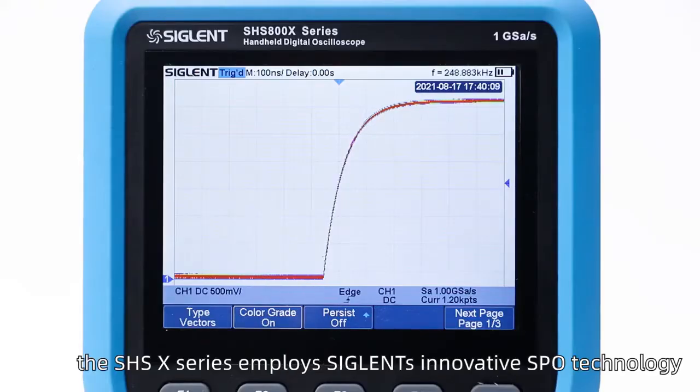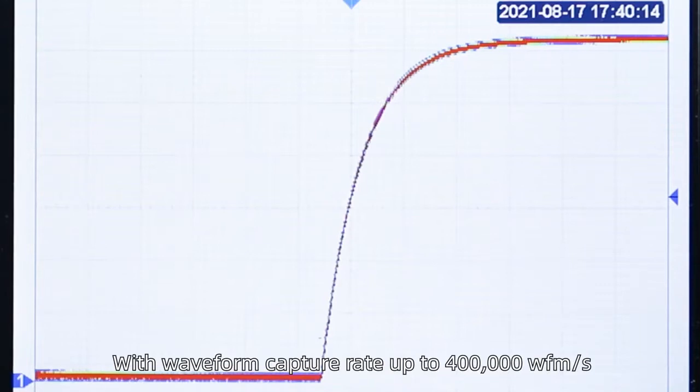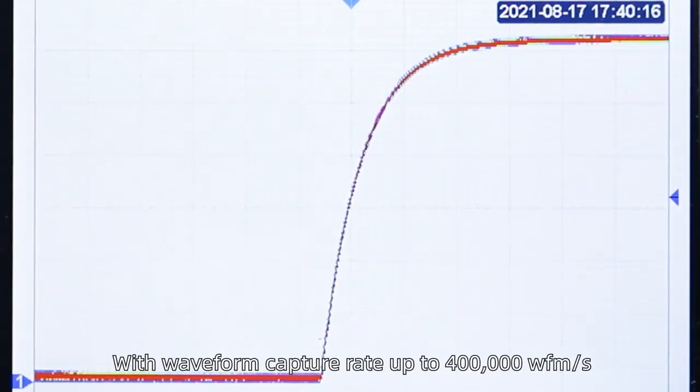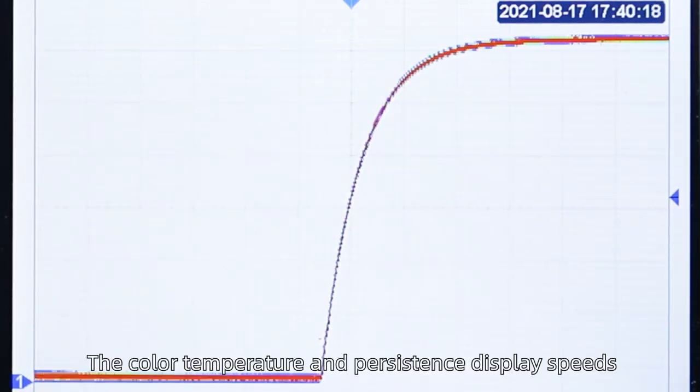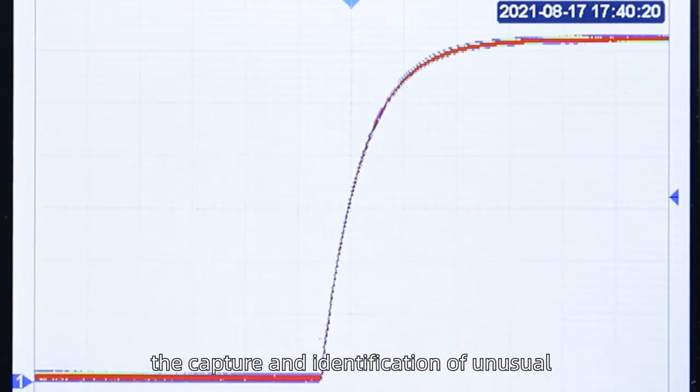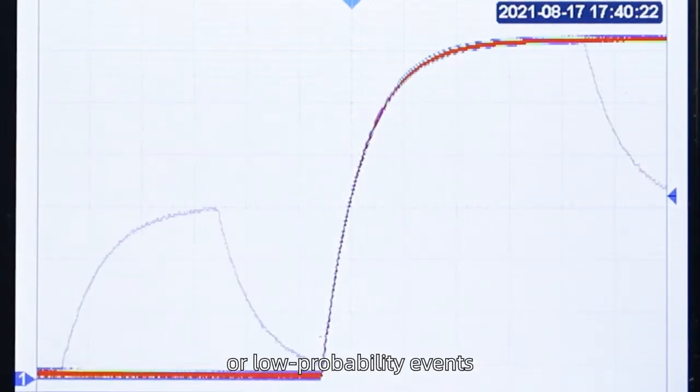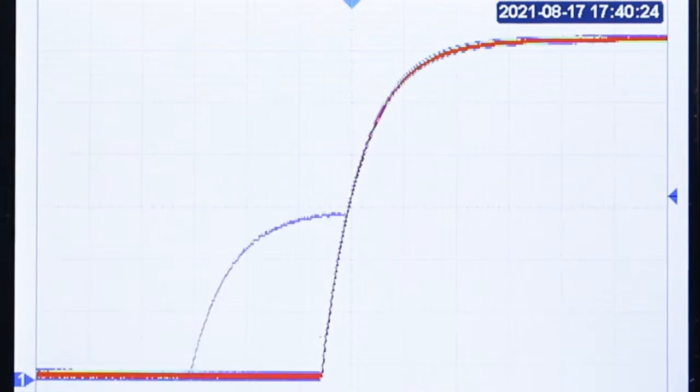In oscilloscope mode, the SHSX series employs Siglent's innovative SPO technology, with a waveform capture rate up to 400 waveforms per second. The color temperature and persistence display speeds the capture and identification of unusual or low probability events.